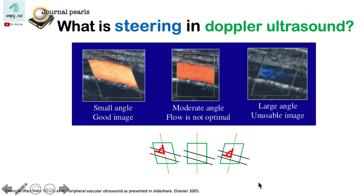Applying it to actual images, here we see a small angle, which is good, while here, in an incorrectly placed steering box, we have a large angle which is more than 60 degrees and hence not ideal.